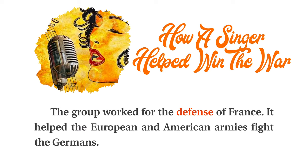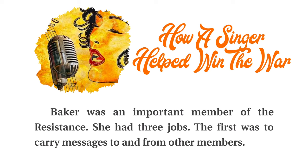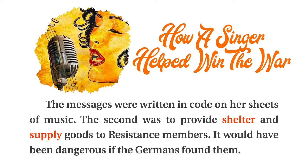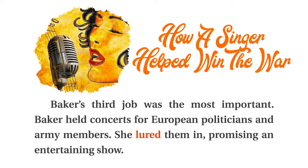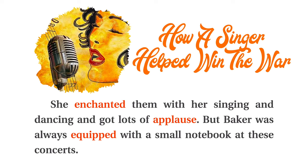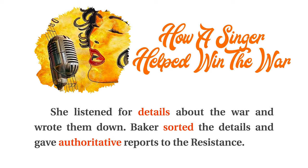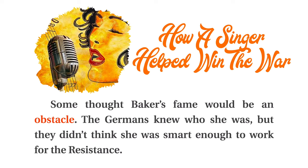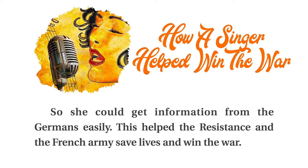It helped the European and American armies fight the Germans. Baker was an important member of the resistance. She had three jobs. The first was to carry messages to and from other members. The messages were written in code on her sheets of music. The second was to provide shelter and supply goods to resistance members. It would have been dangerous if the Germans found them. Baker's third job was the most important. Baker held concerts for European politicians and army members. She lured them in promising an entertaining show. She enchanted them with her singing and dancing and got lots of applause. But Baker was always equipped with a small notebook at these concerts. She listened for details about the war and wrote them down. Baker sorted the details and gave authoritative reports to the resistance. Some thought Baker's fame would be an obstacle. The Germans knew who she was, but they didn't think she was smart enough to work for the resistance, so she could get information from the Germans easily.